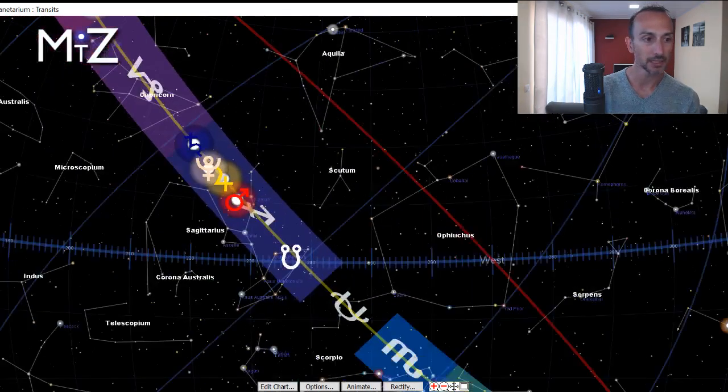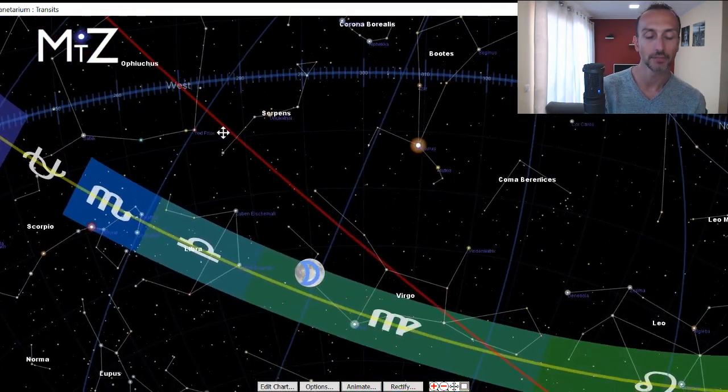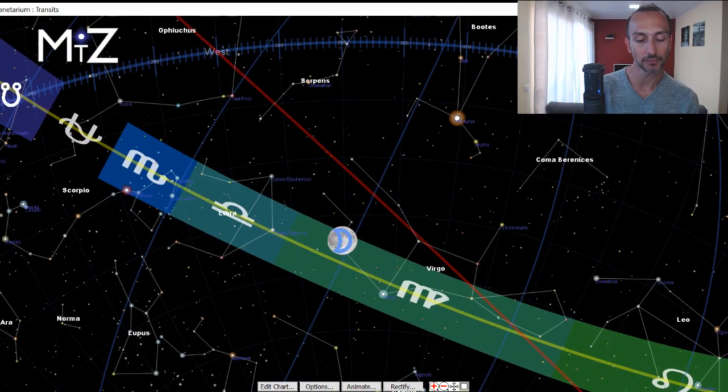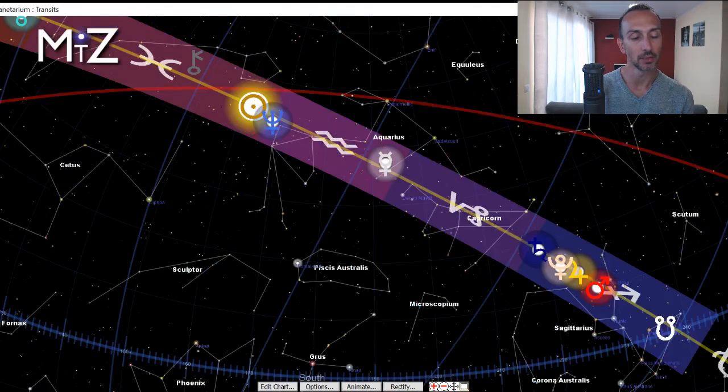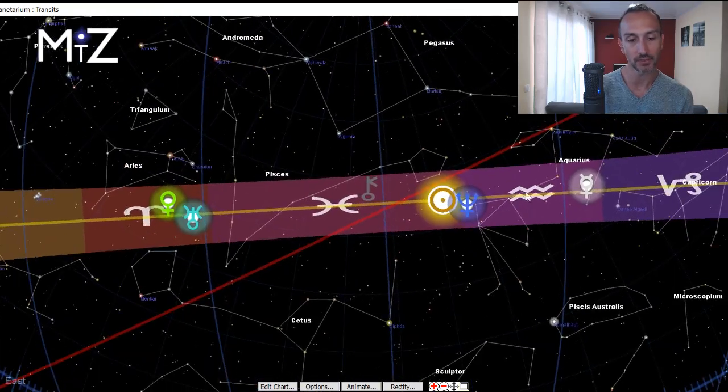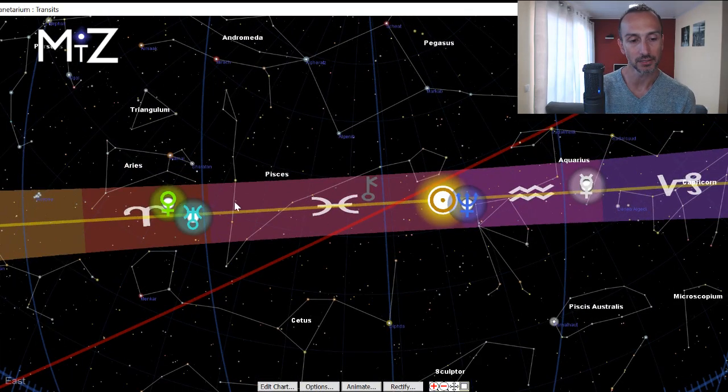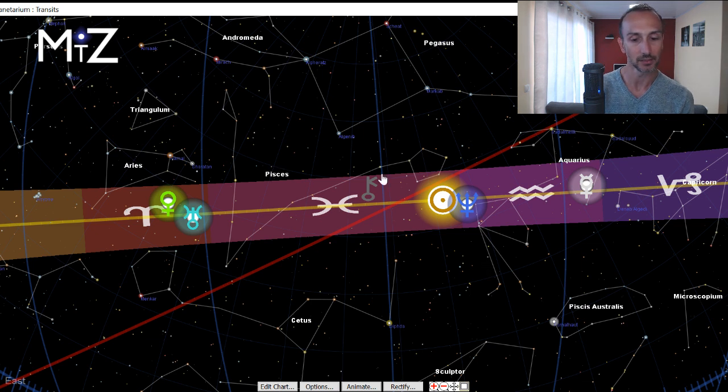The most important thing here today is finishing up this Virgo energy, which is about improvements, refinements, focusing on the details while balancing that with the receptive side of ourself, which is in the larger context of deep watery Pisces, which is great for connecting to the things that are important to us on a soul level and receptive level.